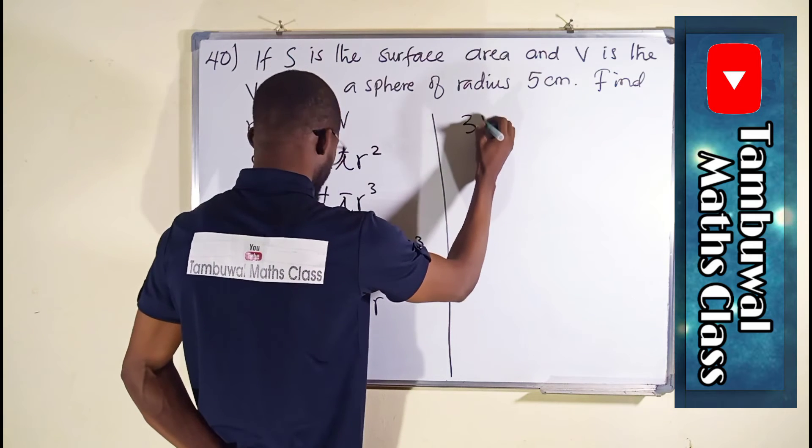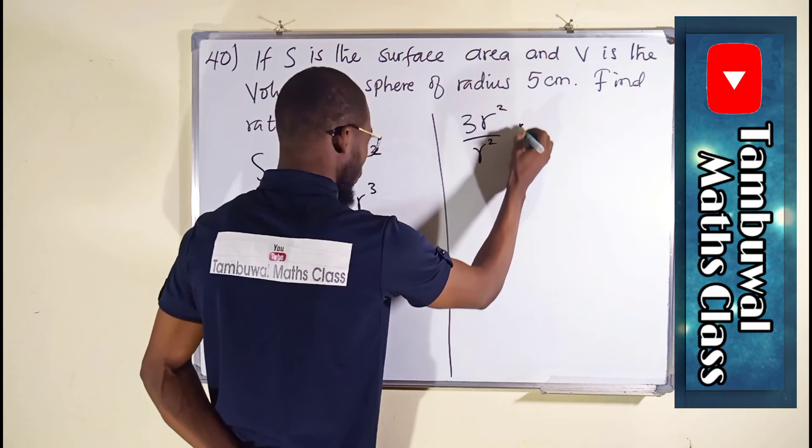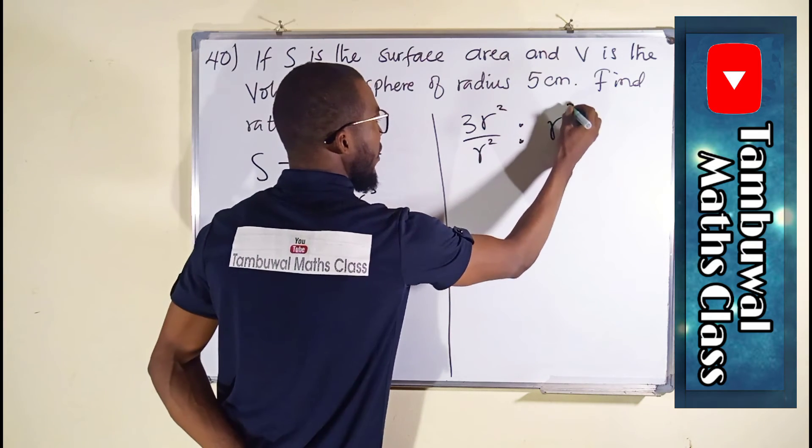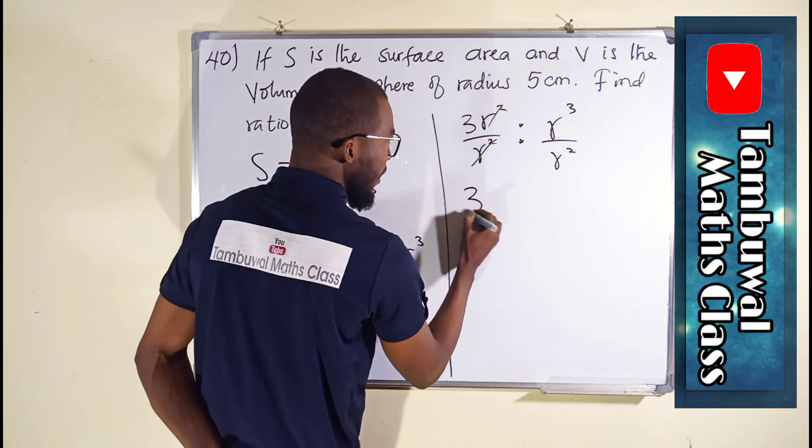So, 3r to the 2nd power. We are going to divide by r to the 2nd power. To r to the 3rd power divided by r to the 2nd power. This will cancel this, leaving only 3 here.